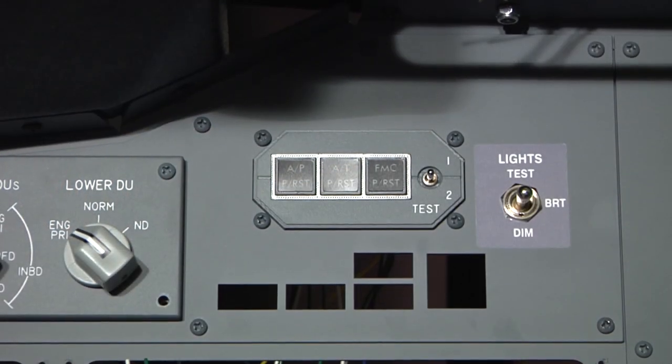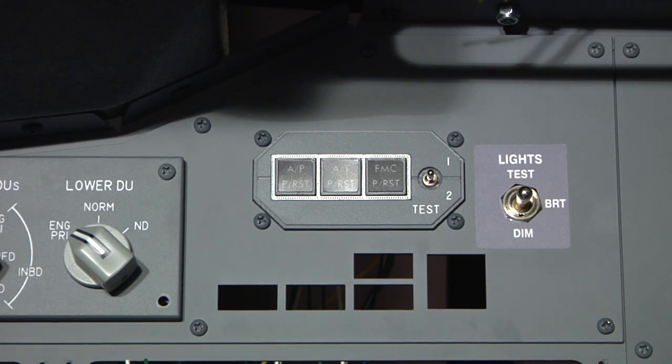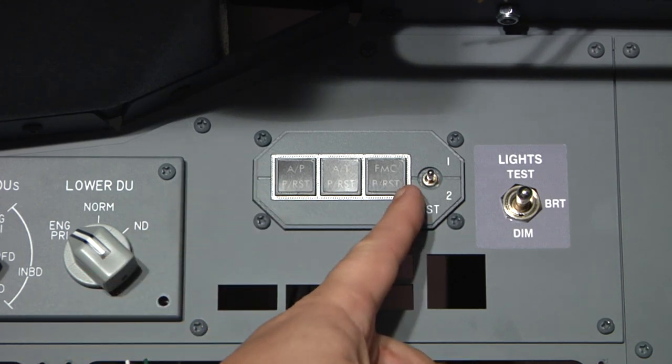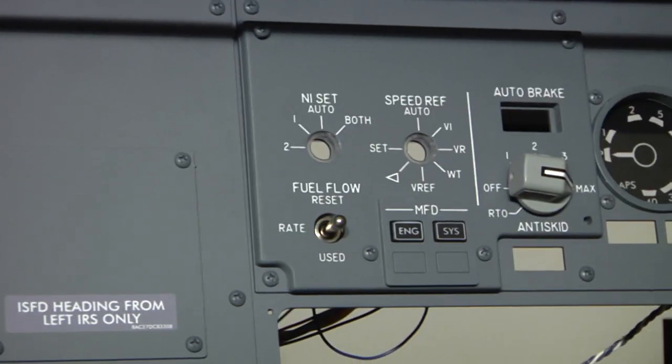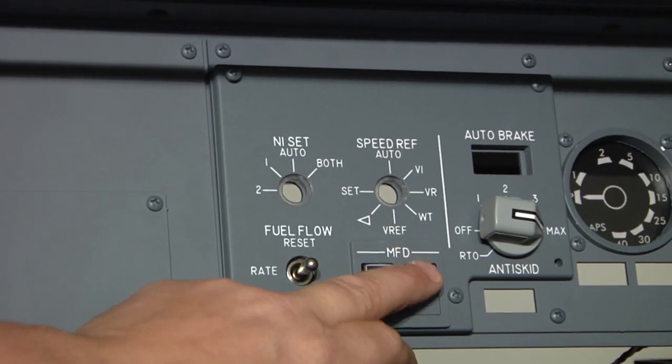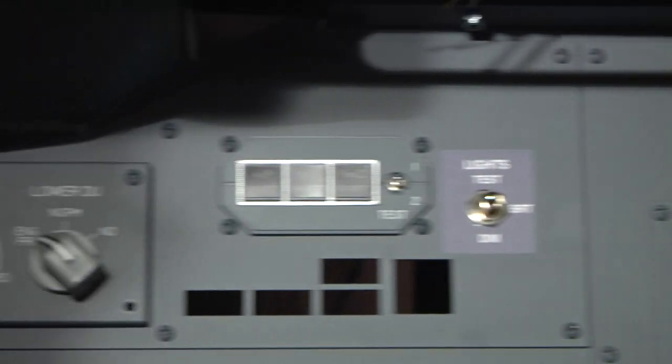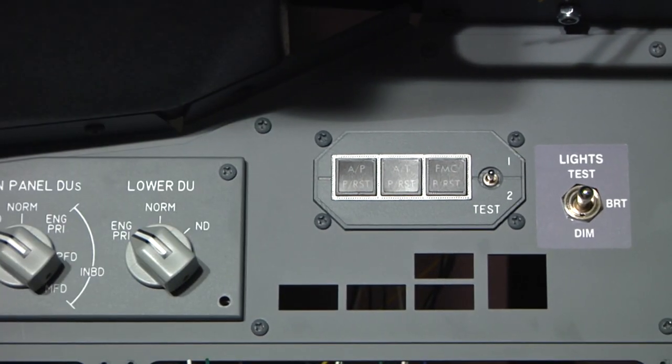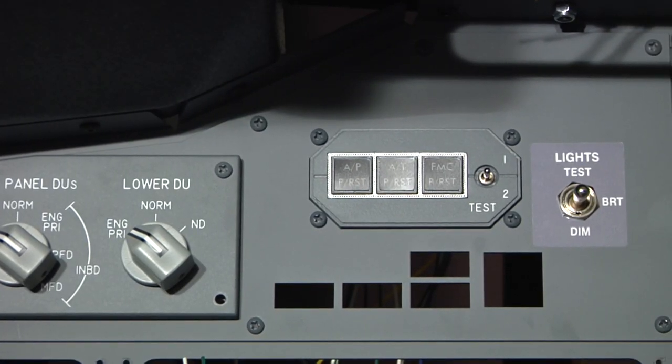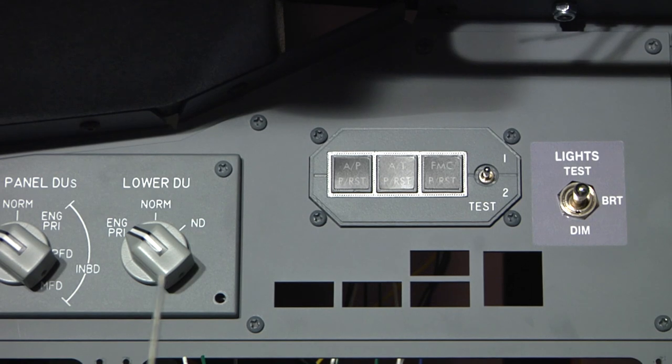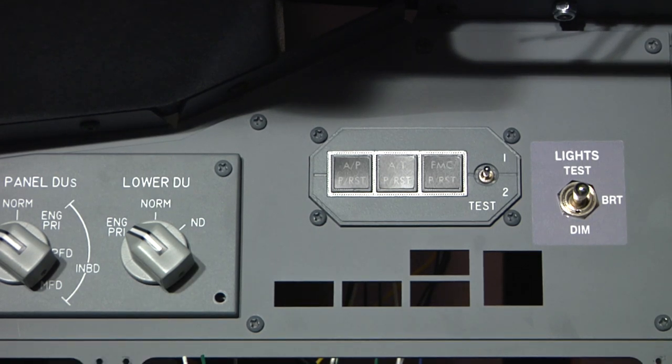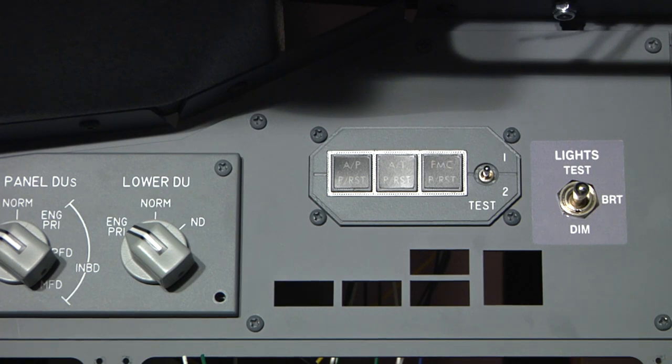The third type of switch that you're going to see on the MIP is the push button. These wire up very simple. They've got a common ground and then they've also got a single wire. So there's not really much to those. They're all color-coded. Should be a snap for you.